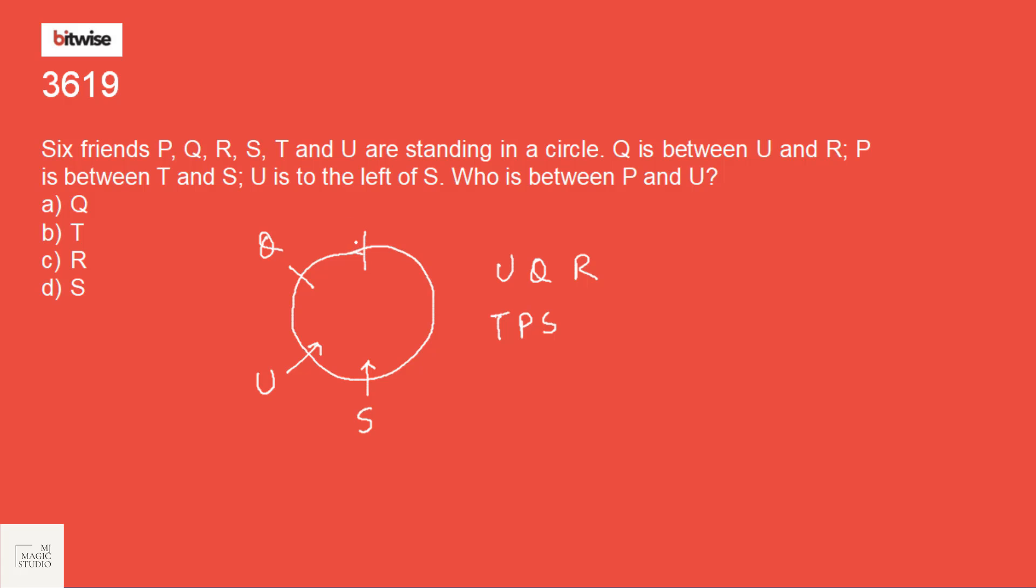Then Q is between U and R. Here we should have Q and then this is R. P is between S and T. So we have S and then we should have P and here we should have T. So we have 1, 2, 3, 4, 5, 6 people standing like this.